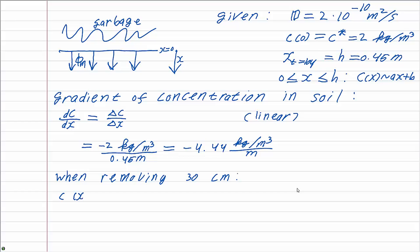When removing 30 centimeters, we are still well within the linear concentration region, so we can calculate the concentration as a function of x as the initial concentration plus the gradient times x, which means that it starts at the solubility of the contamination and declines over the range of x with the negative gradient.